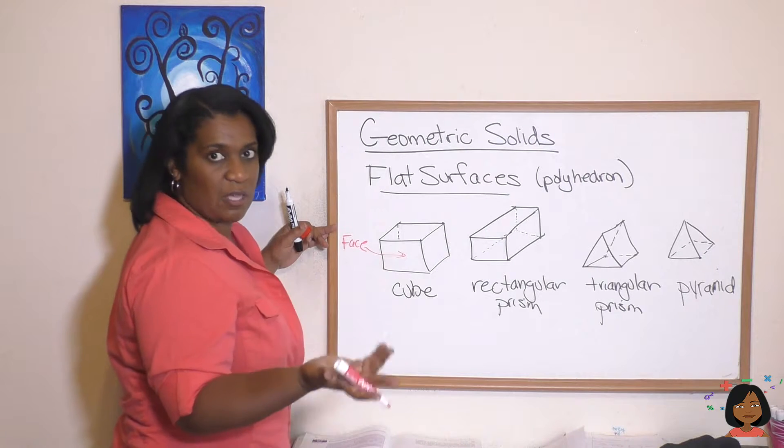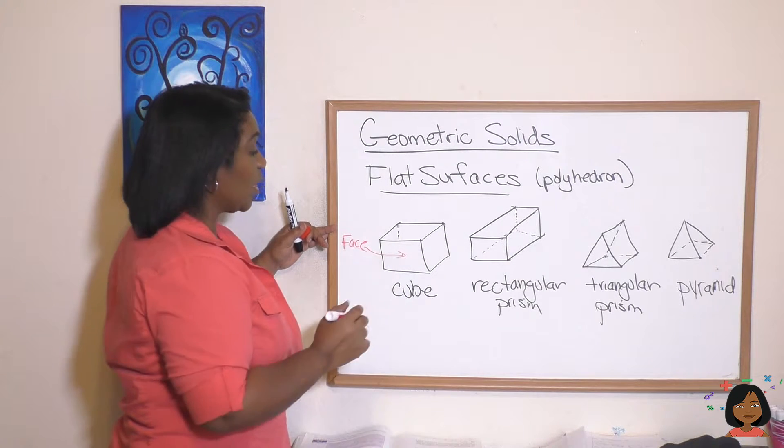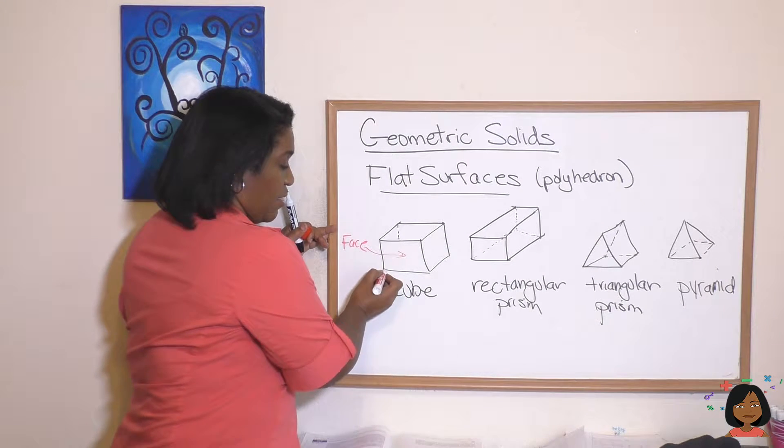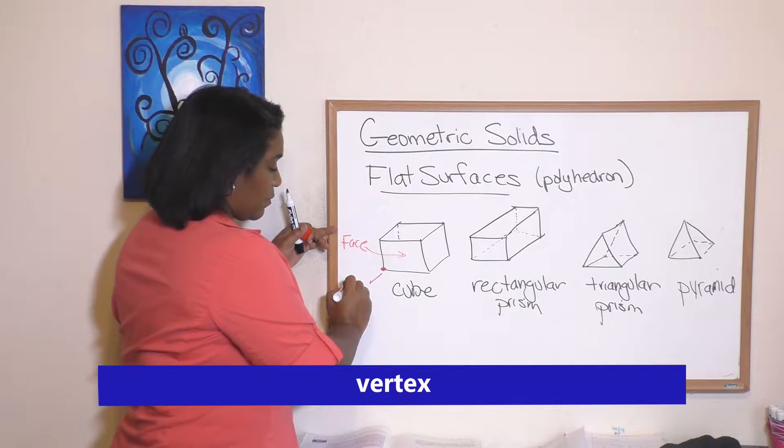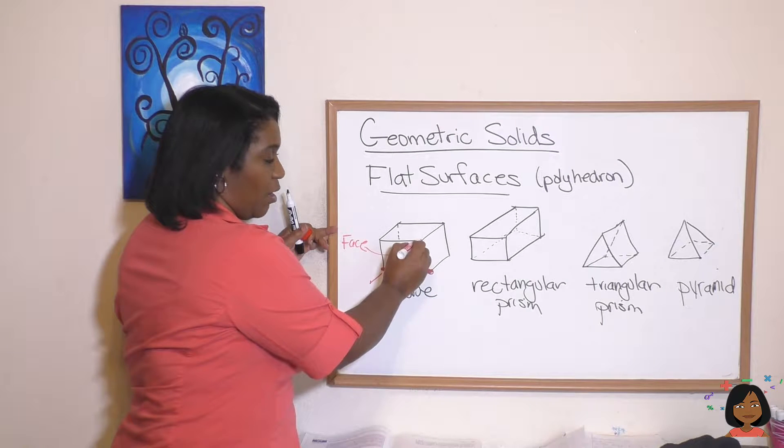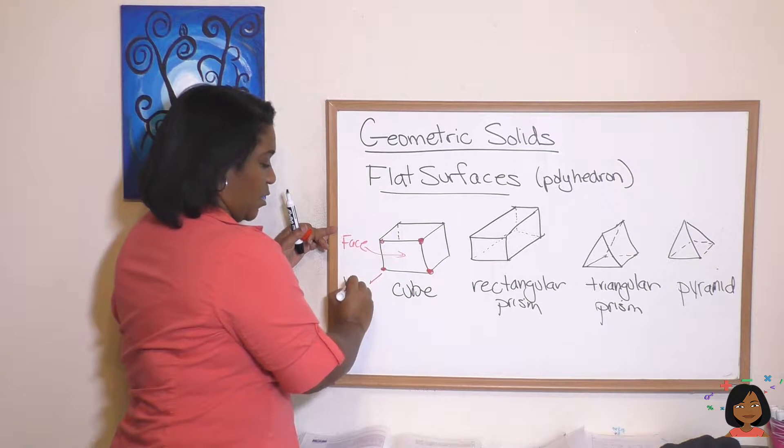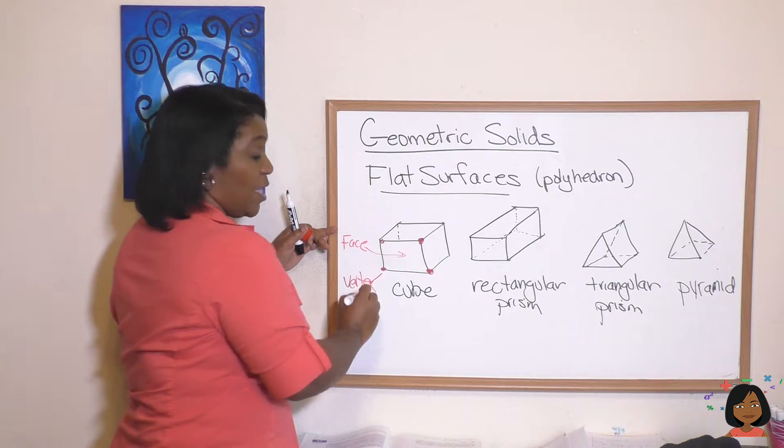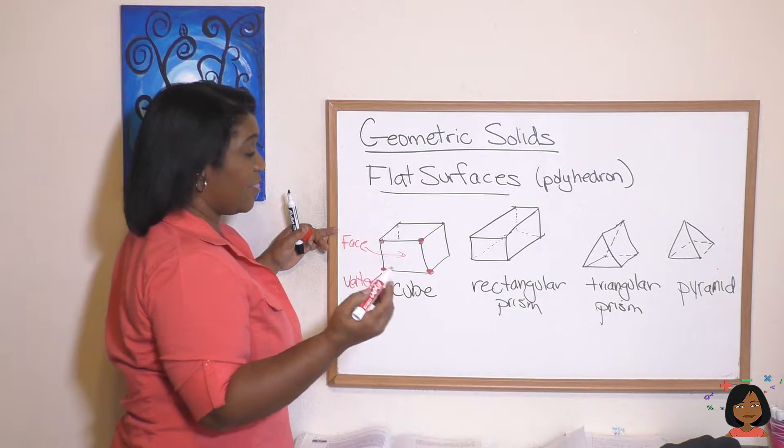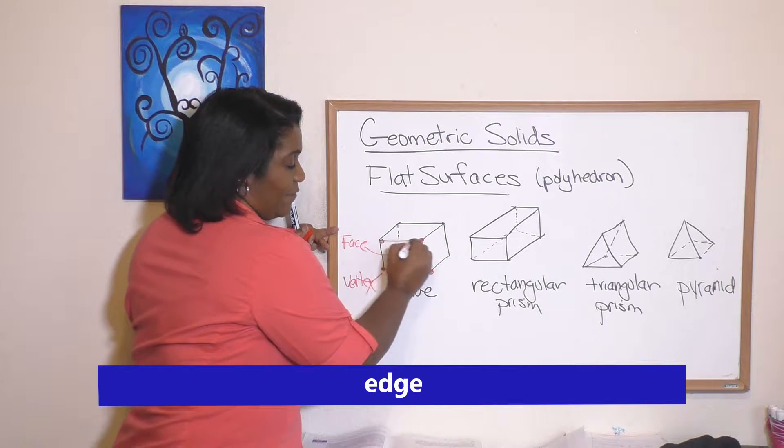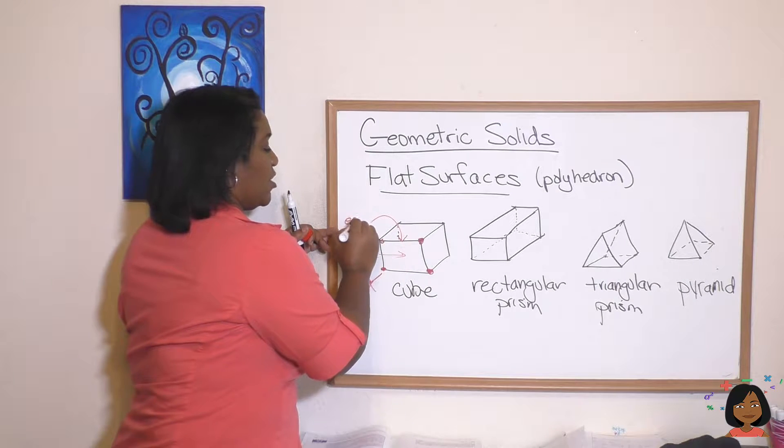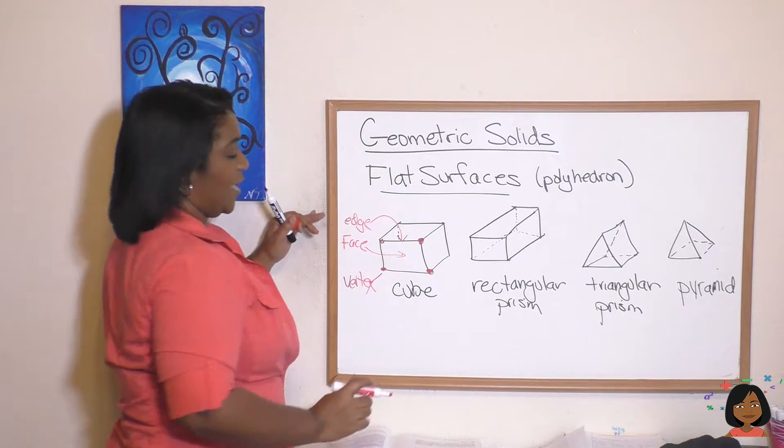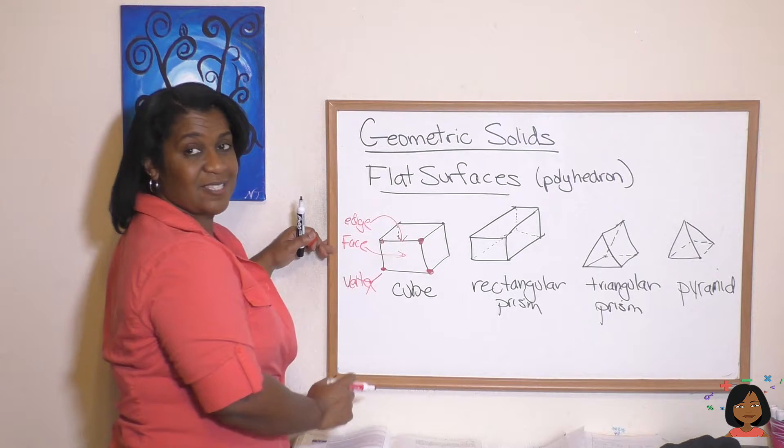We also have another term called the vertex, and the vertex is any point on our rectangular prism. We call that the vertex. The third thing is called the edge - the edge or any of the lines that make up our geometric solid. So we have an edge, a face, and a vertex.